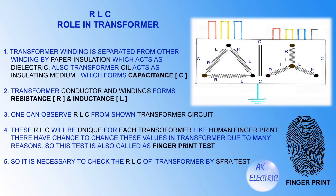Transformer winding is separated from other windings by paper insulation which acts as a dielectric. Transformer oil also acts as an insulating medium, forming capacitance C. The transformer conductor and winding form resistance R and inductance L. These RLC values are unique for each transformer, like a human fingerprint, and they can change due to many reasons. So this test is also called the fingerprint test, and it is necessary to check transformer RLC by SFRA test.